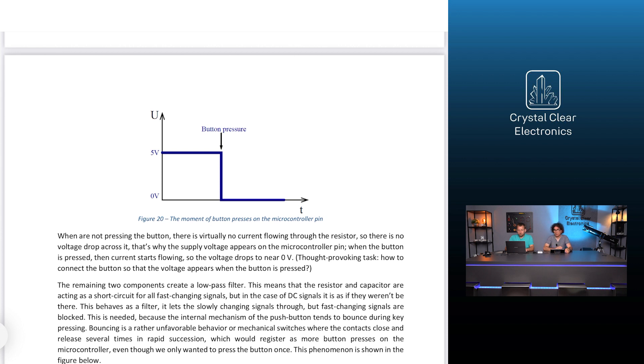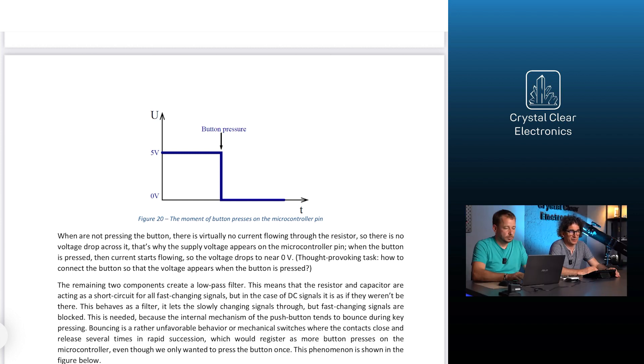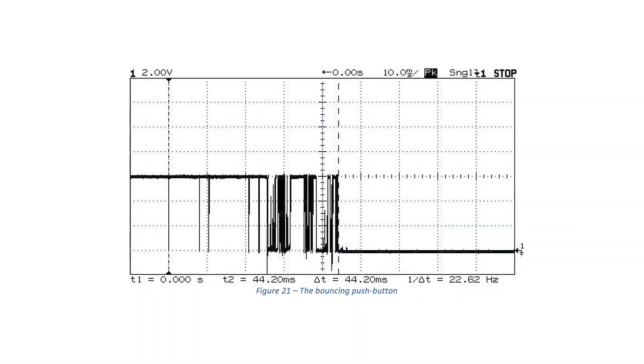You might also wonder how to connect the button so that it is the other way around. The remaining two components create a low-pass filter. This means that the resistor and capacitor are acting as a short circuit for all fast-changing signals, but in the case of DC or slowly-changing signals, it is as if they weren't there. This is called a filter. This is needed because the internal mechanism of the push button tends to bounce during key pressing. Bouncing is a rather unfavorable behavior for us. The contacts close and release several times in rapid succession, which would register as more button presses on the microcontroller, even though we only wanted to press the button once. These so-called high-frequency components can be filtered out with our low-pass RC filter, because they are fast-changing signals and the filter will not let them through.